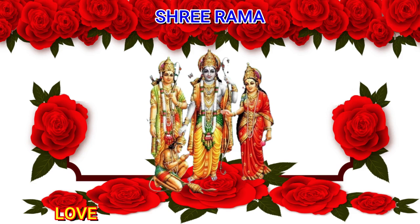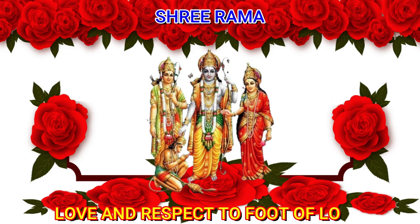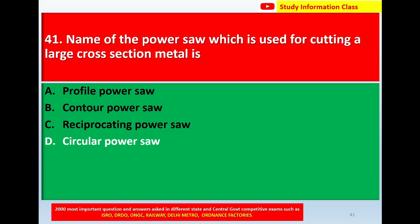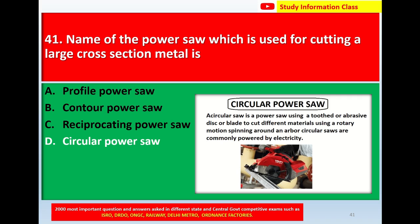Namaste, Sri Rama — love and respect to the foot of Lord Sri Rama. Question number 41: Name the power saw which is used for cutting a large cross-section metal. Options: A) Profile power saw, B) Counter power saw, C) Reciprocating power saw, D) Circular power saw. The correct answer is circular power saw.